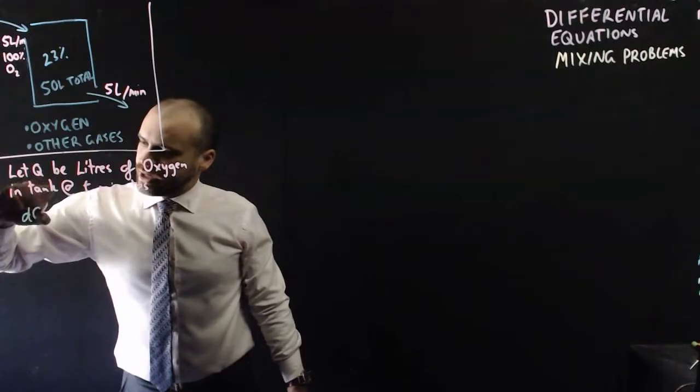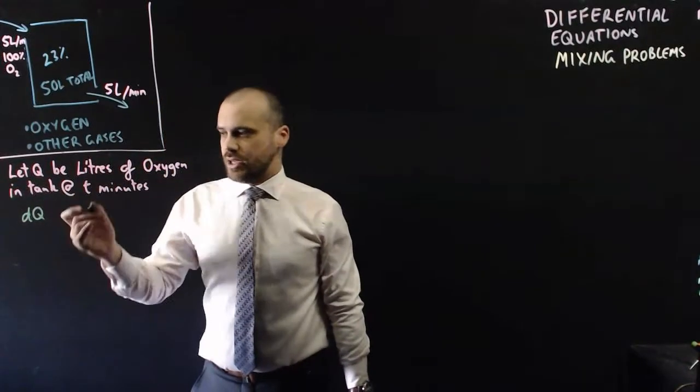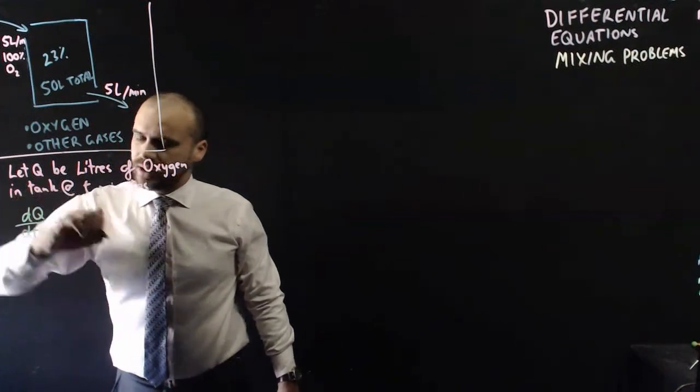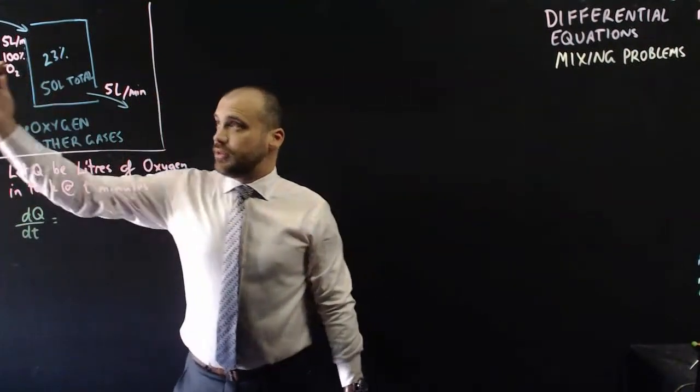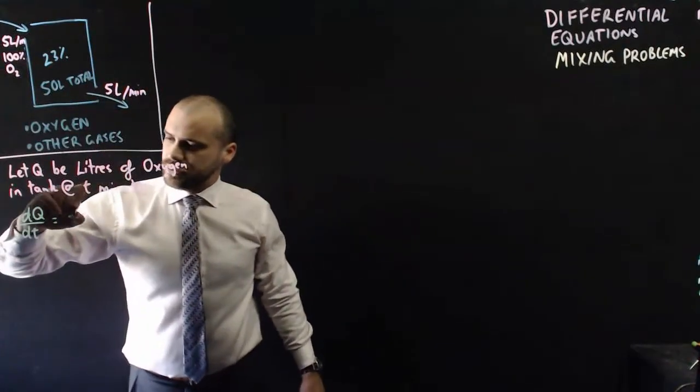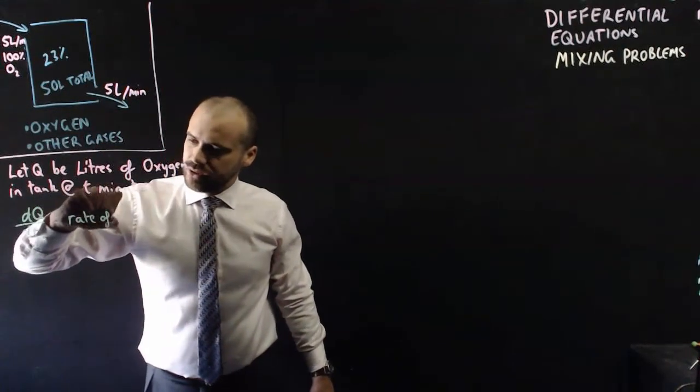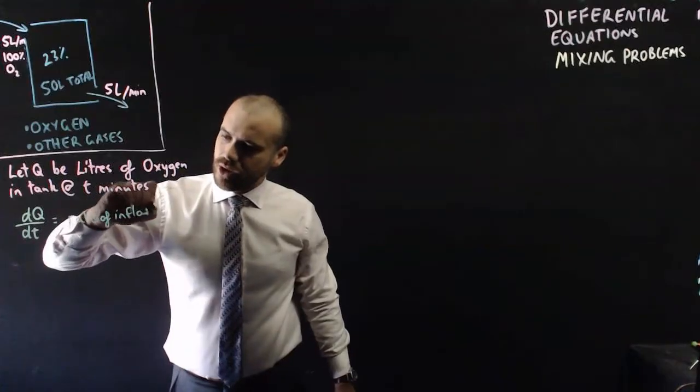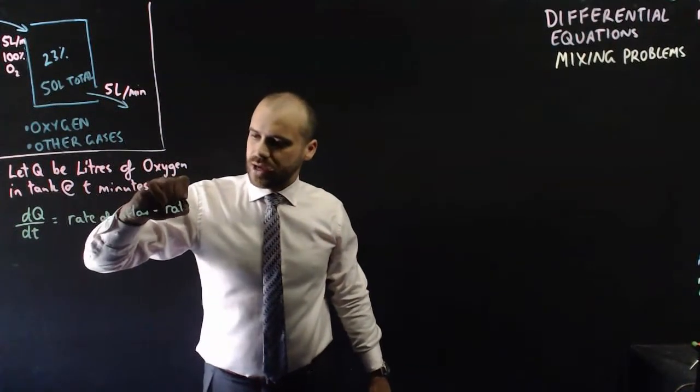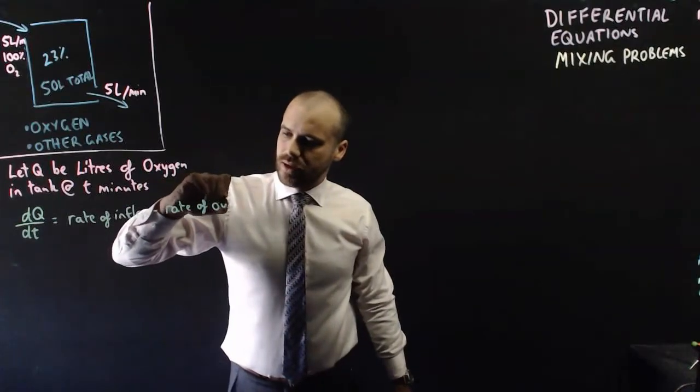And now let's write a differential equation, the rate of change of litres of oxygen in the tank with respect to time. And that's going to be equal to the amount of oxygen going in, or the rate of oxygen going in, the rate of inflow, minus the rate of oxygen going out, the rate of outflow.